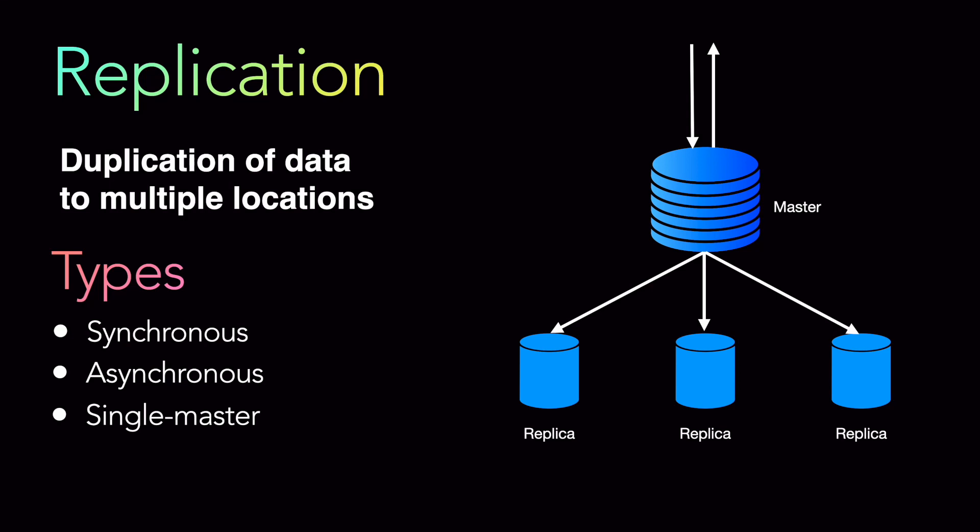Then there are single-master systems. The example we saw here is a single master where major application updates mainly happen at one location and then propagate to all the other replicas. But there can also be multi-master systems, which allow data to be updated at multiple databases at multiple locations simultaneously, and then all those updates are propagated to all the other replicas of those master databases.